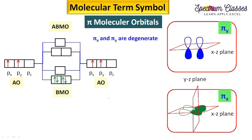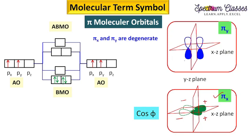Now if we take the yz plane, the π_x orbital is asymmetric about this yz plane — on one side we have plus and on the other side minus. For the π_y orbital, performing the same exercise, we find: one side is minus, another minus, and the other sides plus and plus — so π_y is symmetric about this yz plane.